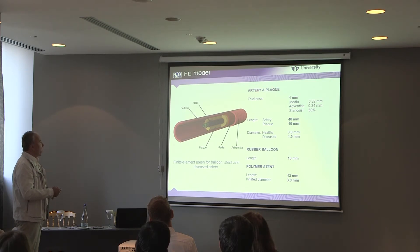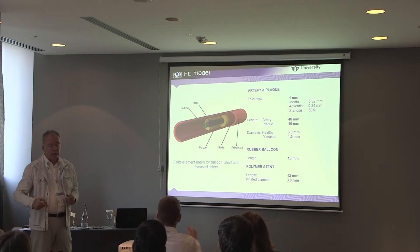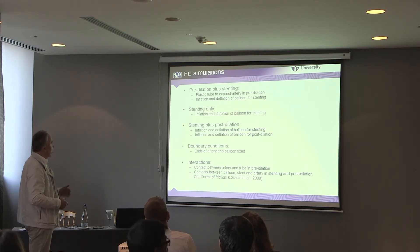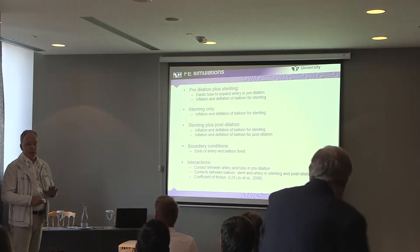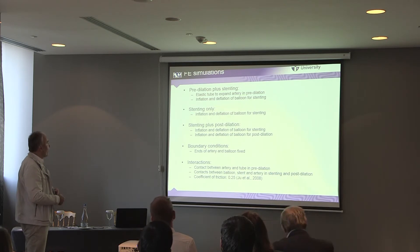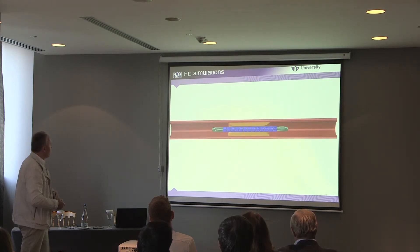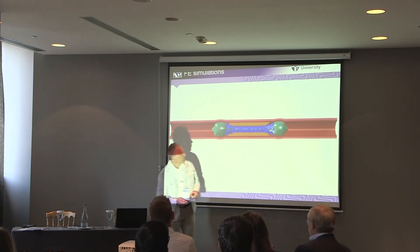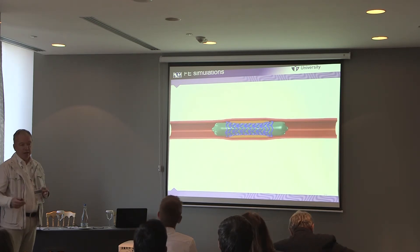We are modeling the artery and the plaque, and we are also modeling the balloon — not already expanded, but in its initial state — and we are modeling the polymer stent. These are the results of our finite element simulations. You can see the typical dog-boning effect, and there is a pre-dilation and dilation process as a result.